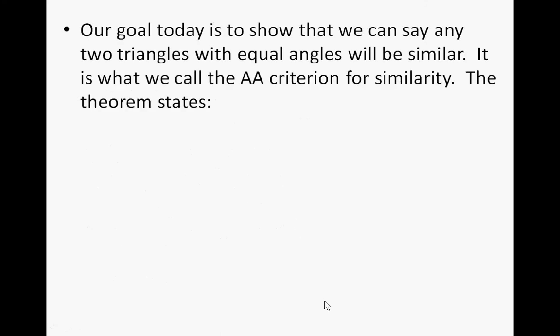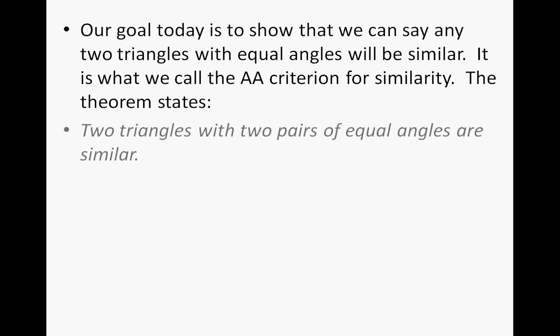Our goal today is to show that we can say any two triangles with equal angles will be similar. And that is what we call the AA criterion for similarity. The theorem states that two triangles with two pairs of equal angles are similar.